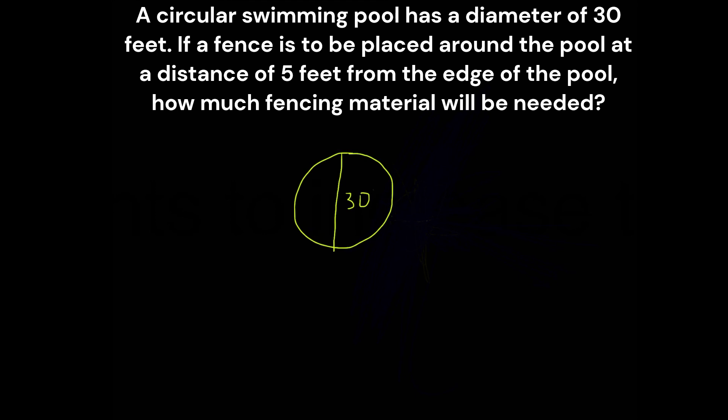And then it states that a fence needs to be placed around the pool at a distance of five feet from the edge of the pool. So five feet from the edge of the pool is about that much. I'm going to write five feet here,